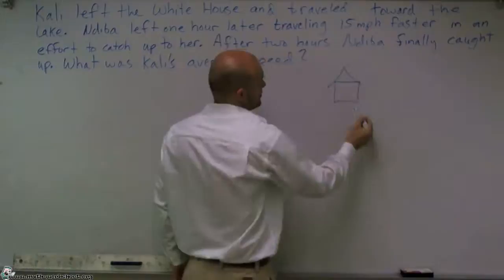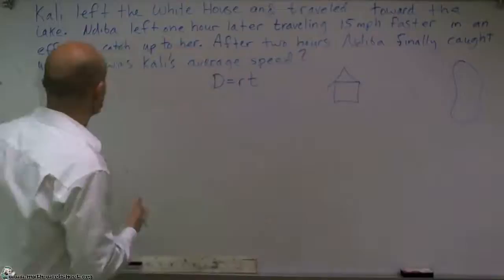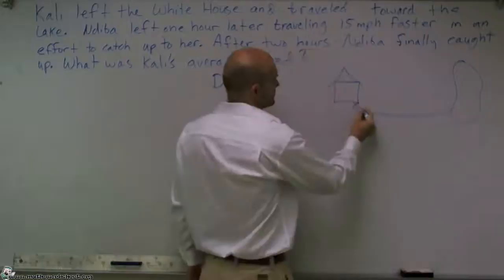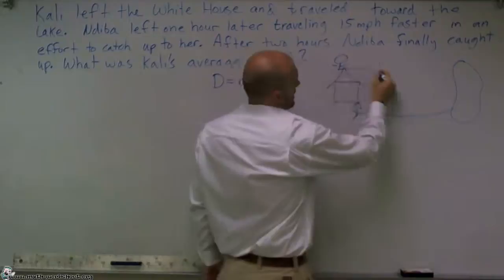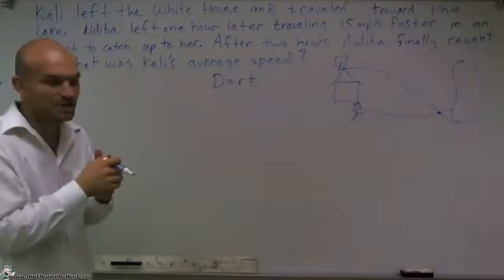It says they left the White House. So it doesn't need to be special, draw a little house, and then they went to a lake. Now both of them, it just says left. One left an hour later. So you can represent here maybe Callie, and then Nadeeba leaves an hour later. And what you can see is before they get there, they intersect and they catch up with each other.